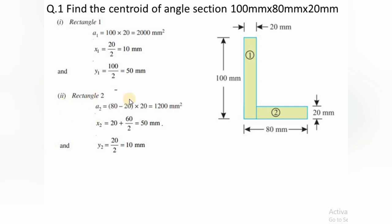For Rectangle 2: since the total length is 80 mm and we've already accounted for 20 mm, the remaining breadth is 80 − 20 = 60 mm. So A2 = 60 × 20 = 1200 mm². The centroidal distance x2 from the vertical reference axis is 20 + 60/2 = 50 mm. The centroidal distance y2 from the horizontal reference axis is 20/2 = 10 mm.